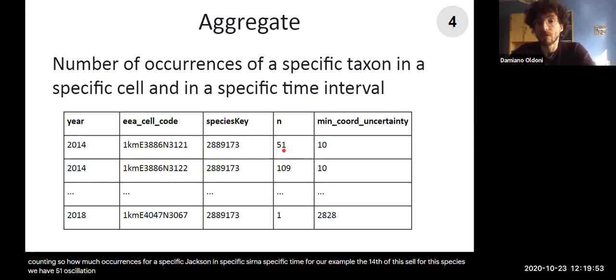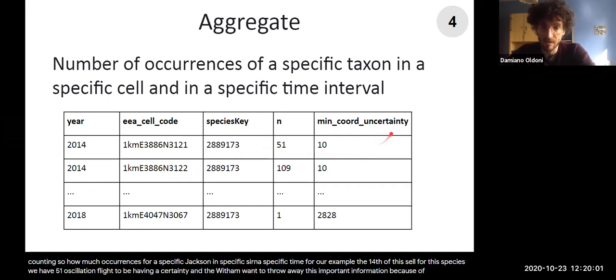Well, as you see from the previous slide, we have an uncertainty. And we don't want to throw away this important information because, for example, in this case, about all, there is at least one observation with 10 meters uncertainty. It's the minimum coordinate uncertainty that you have among all these point observations.